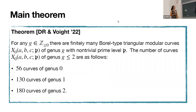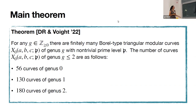Going back to our main theorem — now we can understand what we wrote before. We fix a genus G and prove there are finitely many triangular modular curves X_0(a,b,c; p) of genus G with non-trivial admissible prime p. The number of curves in the small genus cases are 56, 130, and 180. These are the interesting ones because genus 0 and 1 tell you for which cases you have hope of finding infinitely many rational points.